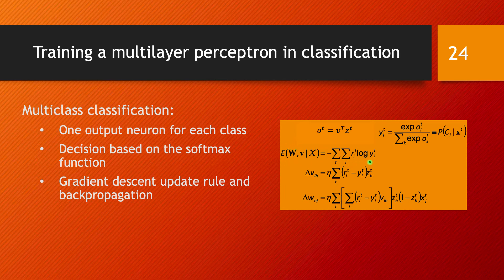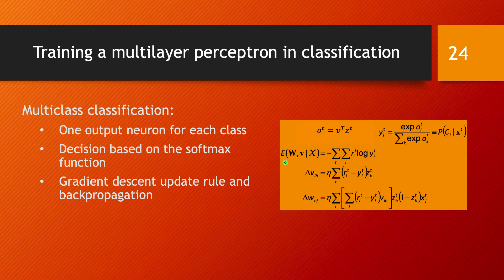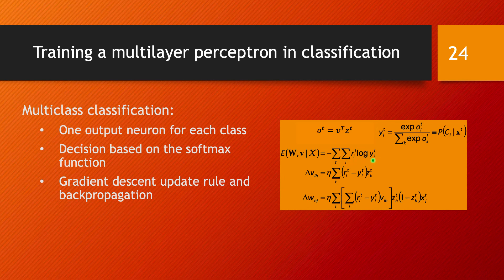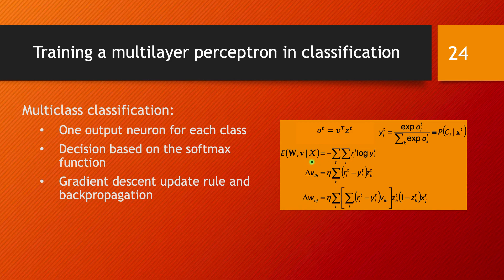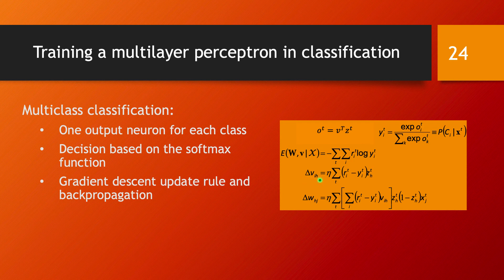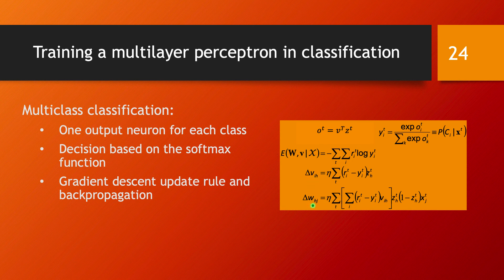And then it goes the same way as before. We take the log likelihood as we did for any classification problem and we have this error function. Then we calculate with gradient descent the update for these weights based on the partial derivatives of this error function with respect to V and then with respect to W.